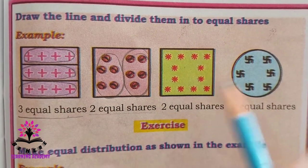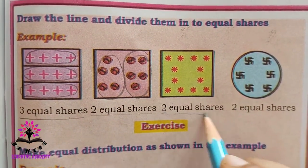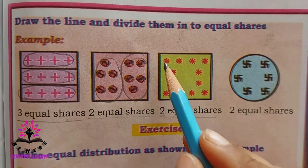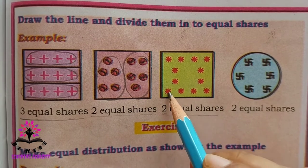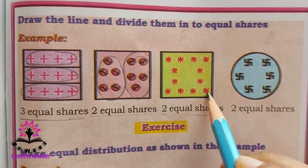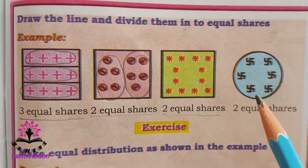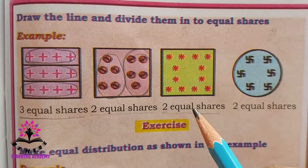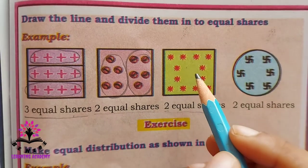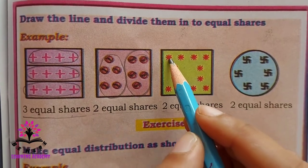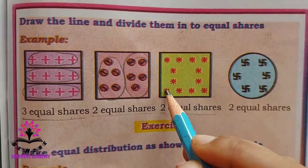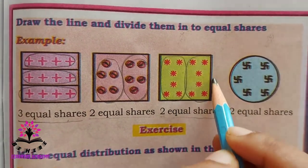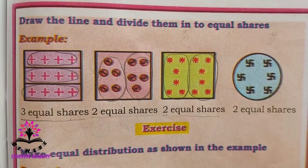Here you see small flowers — you have to make two equal shares. Let us count how many flowers are given: one through twelve. When you divide twelve by two, how many will come in one group? Yes, it is six. So you put six flowers in one group, and the remaining form the other group — six in each group. See the next one: six items, divide by two, it will be three in one group — you have two groups.